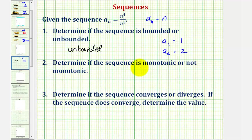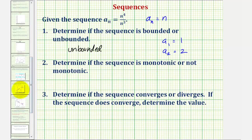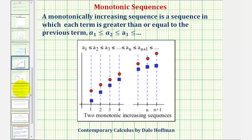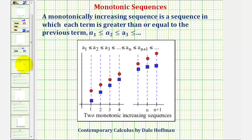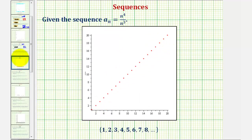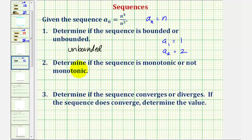Next we want to determine if the sequence is monotonic or not monotonic. A sequence is monotonic if it's always increasing or always decreasing. A monotonically increasing sequence is one in which each term is greater than or equal to the previous term. Here are two examples of monotonically increasing sequences. Our sequence is monotonically increasing, as we can easily see from the graph, and therefore we do have a monotonic sequence.